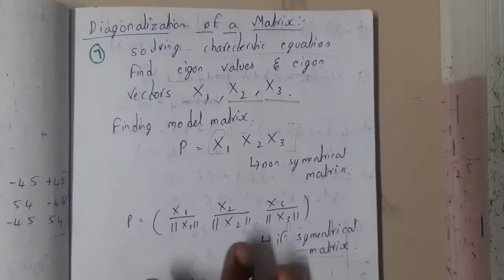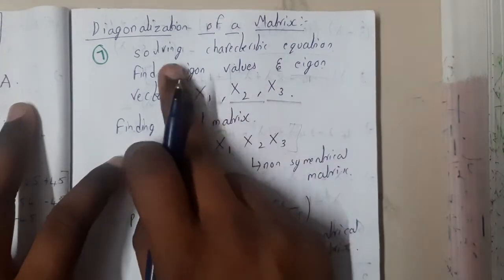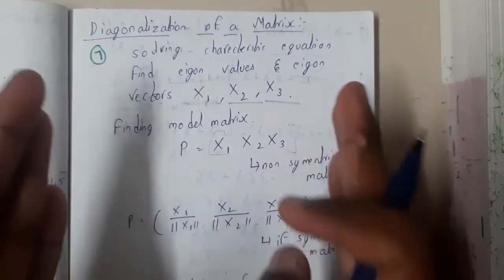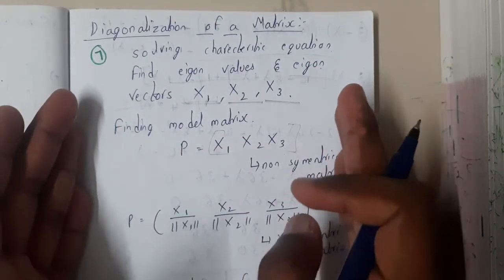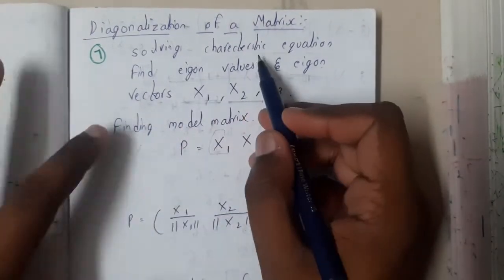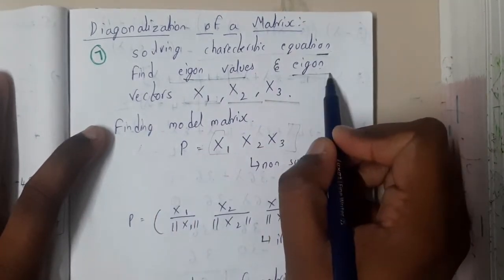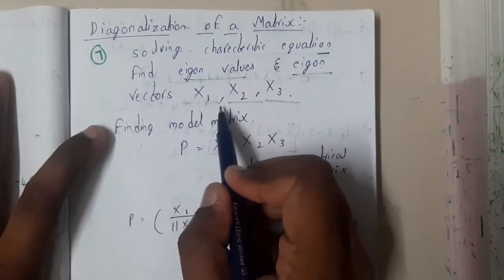Basically, here also the same method continues. We are discussing the characteristic equation, right? So again here also you will be writing the characteristic equation, you will find the eigenvalues and eigenvectors.